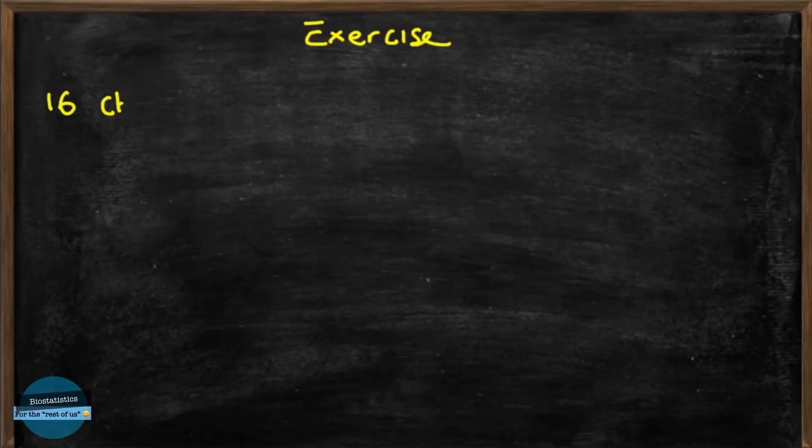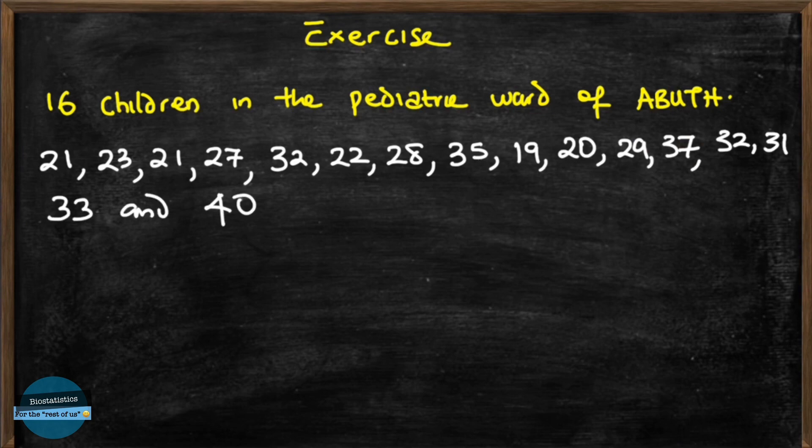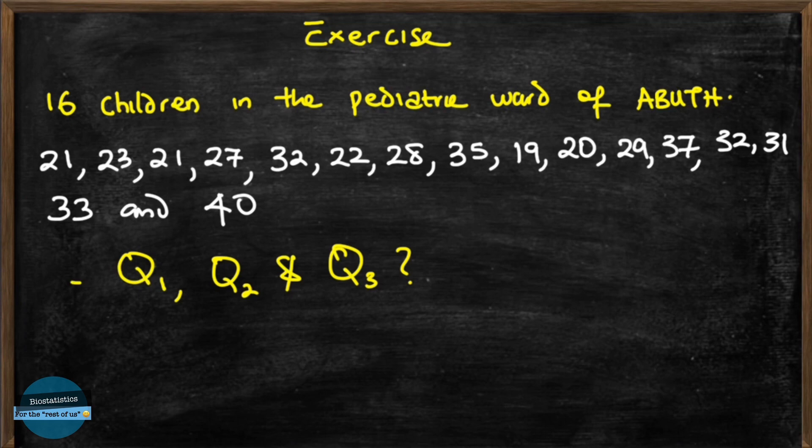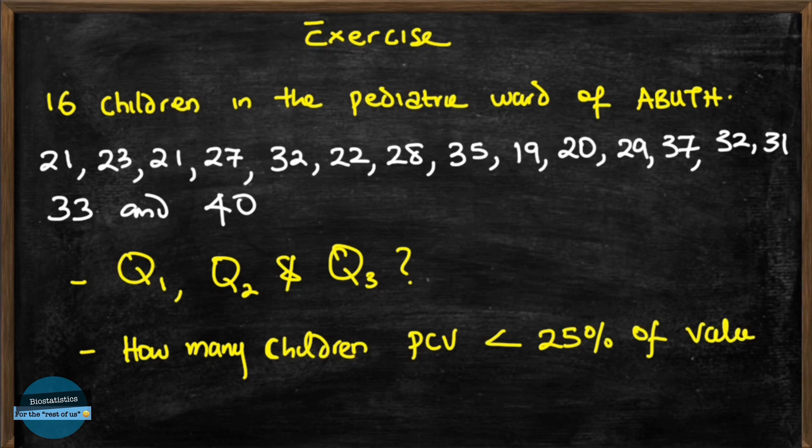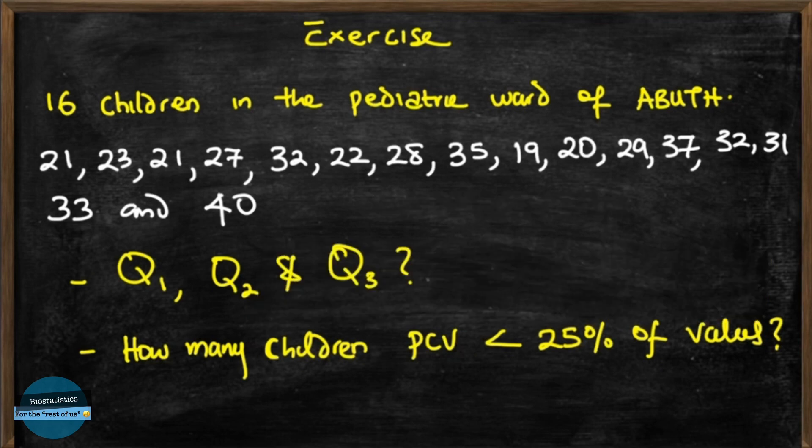Now it's your turn. The PCV of 16 children receiving chemotherapy in the paediatric ward of Amadou Belou University Teaching Hospital were as follows. Calculate the first, second, and third quartiles. How many children had a PCV less than 25% of all the values? Put your responses in the comment section below and please do not ignore this. In my next video, God willing, we will be identifying the quartiles of a grouped frequency distribution. Now if you've gained value with this video, don't forget to like, share and subscribe for more videos like this. And as always, thanks for watching.